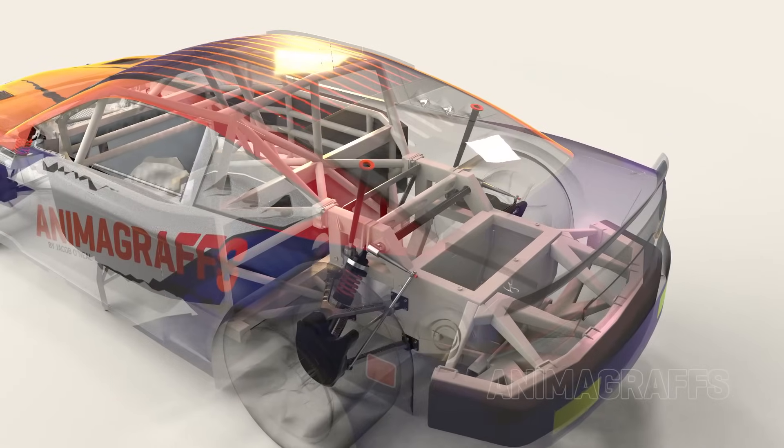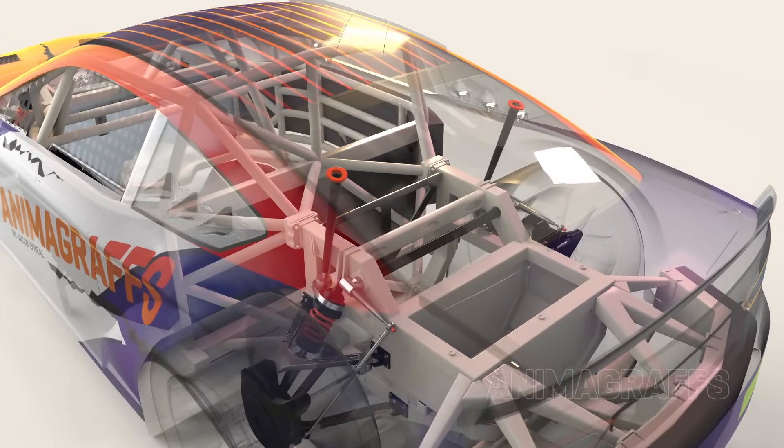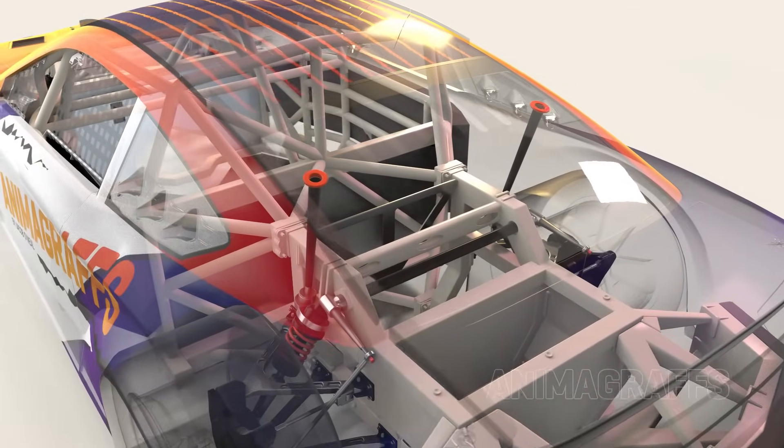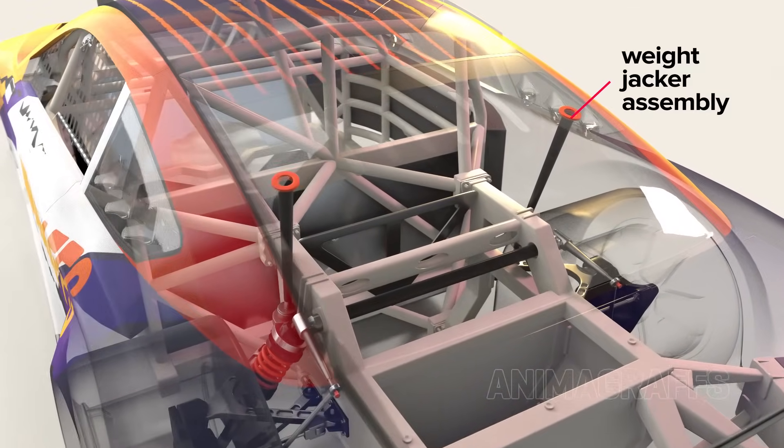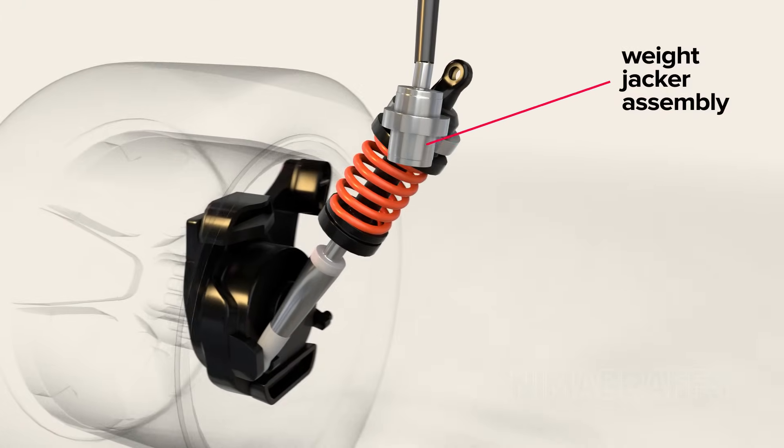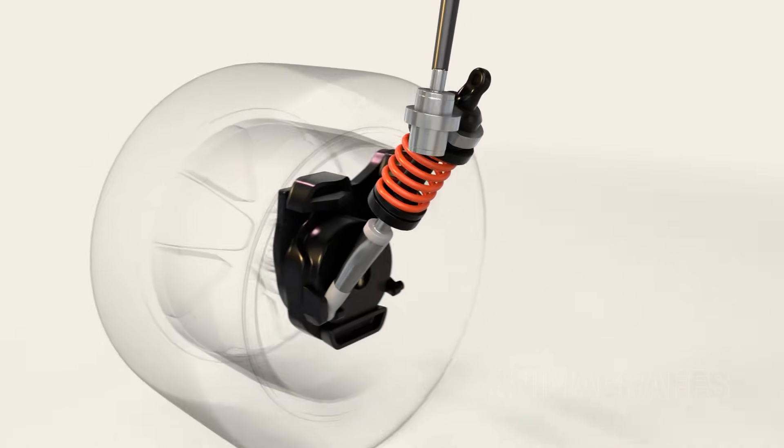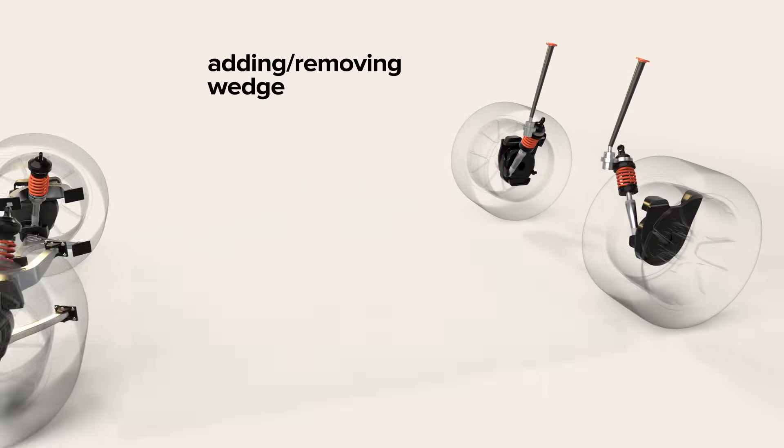The car's weight distribution can be easily adjusted, for instance during a pit stop, by inserting a tool through the rear window into the weight jacker assembly. This hydraulic system controls rear spring compression independently. The process is called adding or removing wedge.